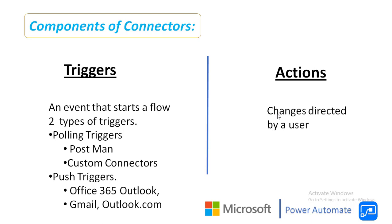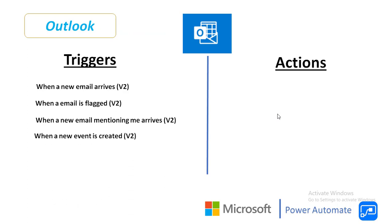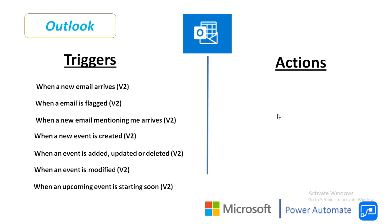All actions directly map to operations defined in the connector. Now I will show you an example of what kind of triggers and actions are available for Outlook. Under the triggers, we have: when a new email arrives, when an email is flagged, when a new email mentioning me arrives, when a new event is created, when an event is added, updated or deleted, when an event is modified, and when an upcoming event is starting soon.